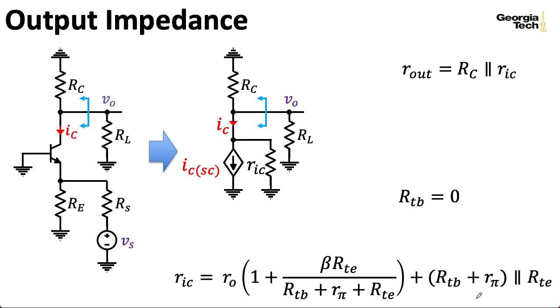Anyway, what about RTE? Well, remember that's RS in parallel with RE. Note that if we could approximate R0 as being infinite, RIC would be infinite, and then Rout would be just our choice of resistor at the collector.